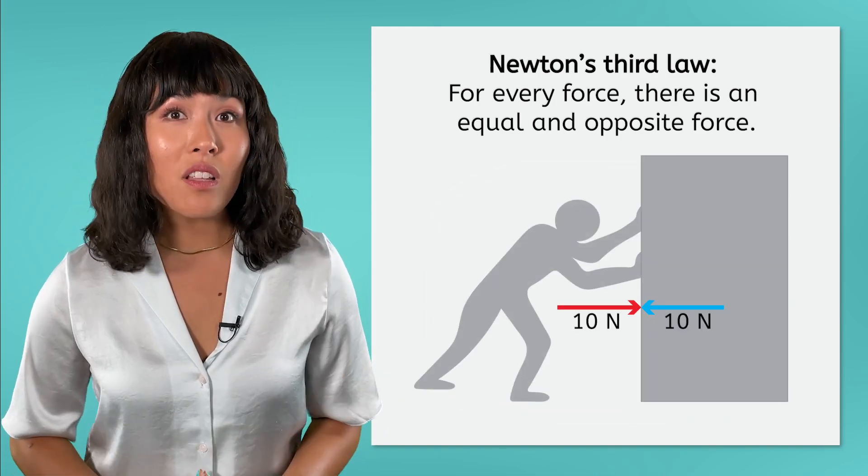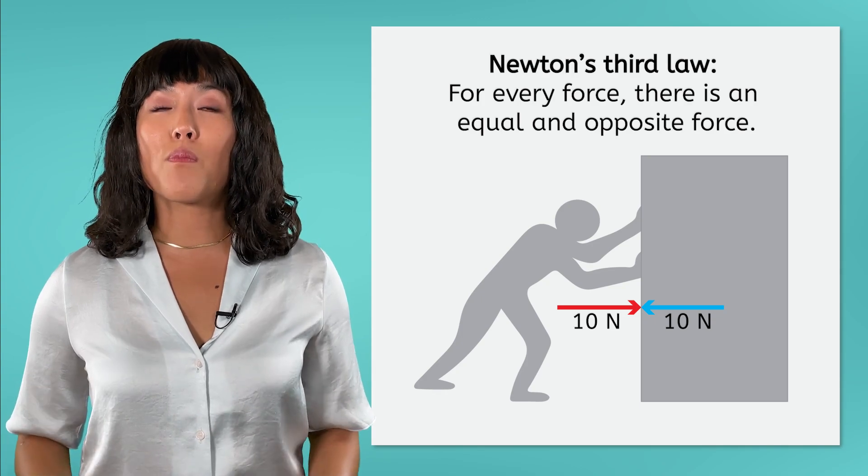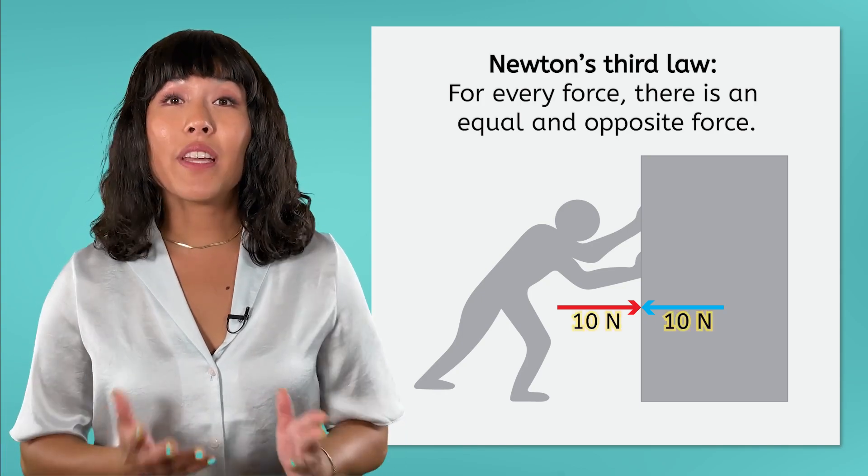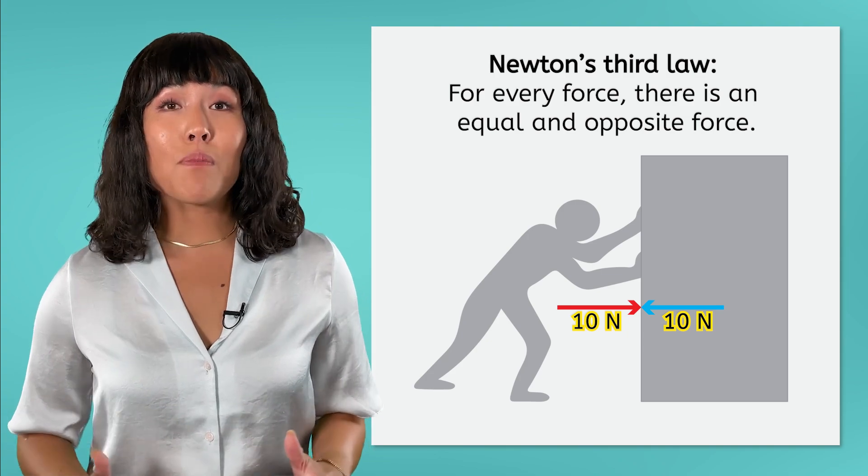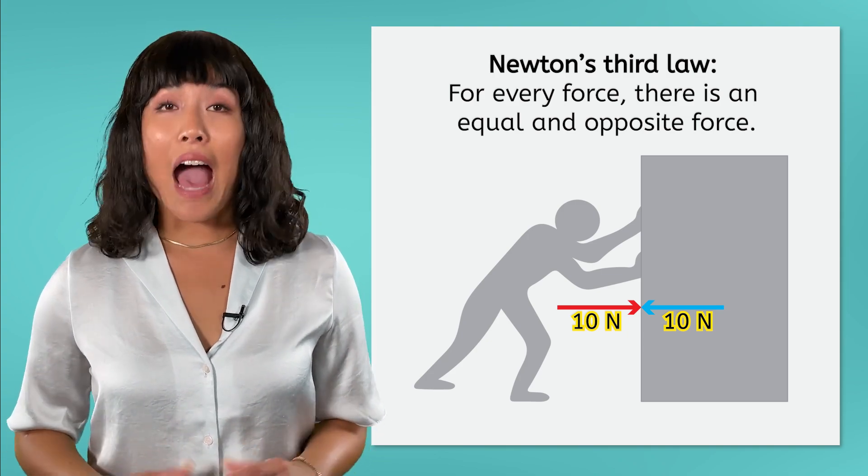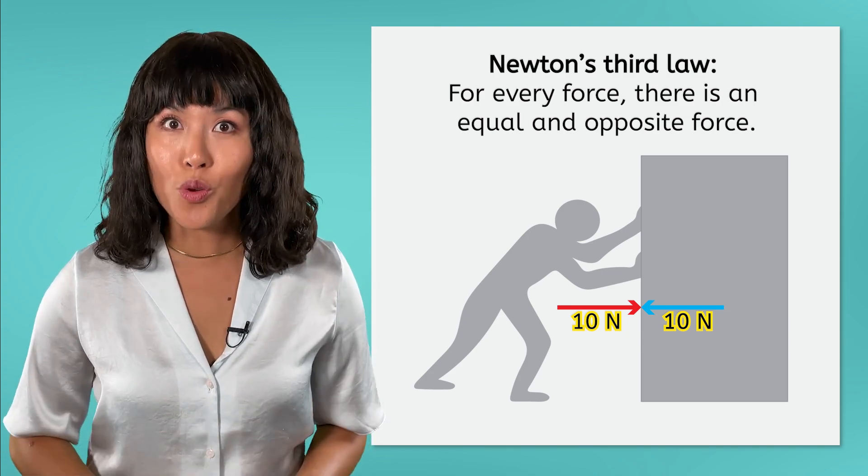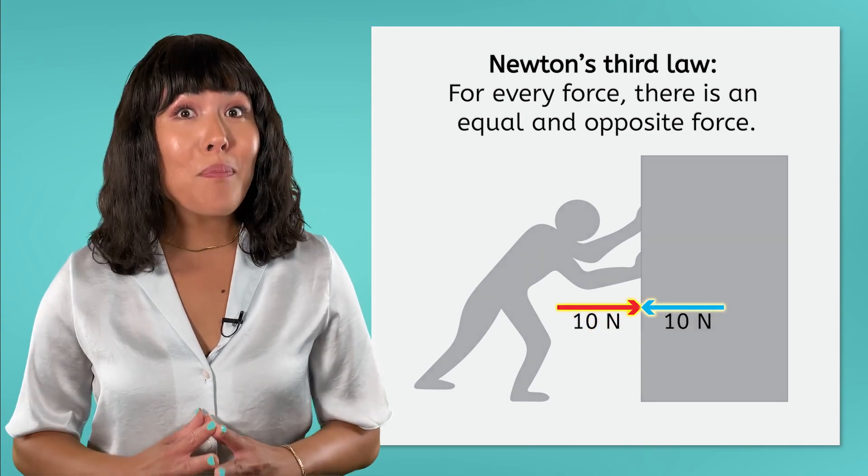This is why Newton's third law says that the forces involved are both equal and opposite. They are equal in magnitude, meaning both forces in this example have a magnitude of 10 newtons, but they were in opposite directions.